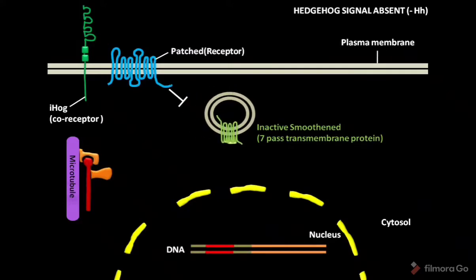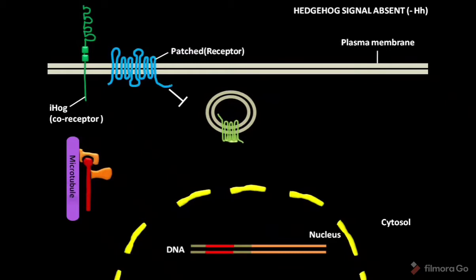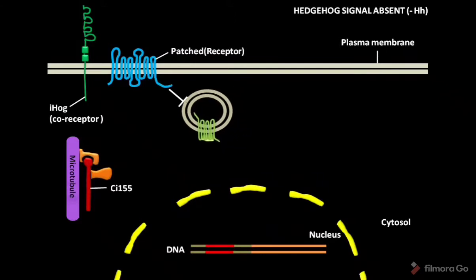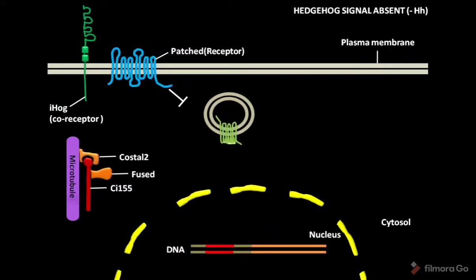The Smoothened is a 7-pass transmembrane protein. In the cytosol, the transcription factor CI155 is anchored to the microtubule by kinase-related protein COSTAL2 in association with serine-threonine kinase fused. The CI stands for cubitus interruptus.